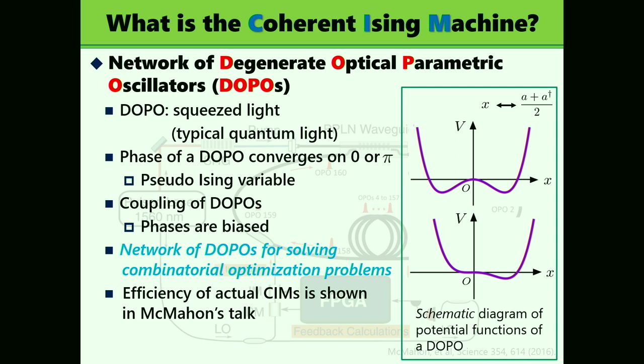DOPO is squeezed light, and that is a kind of typical quantum light. We utilize phases. One of the properties we utilize is phase of DOPO converges on zero or pi, and so we regard them pseudo-Ising variables.